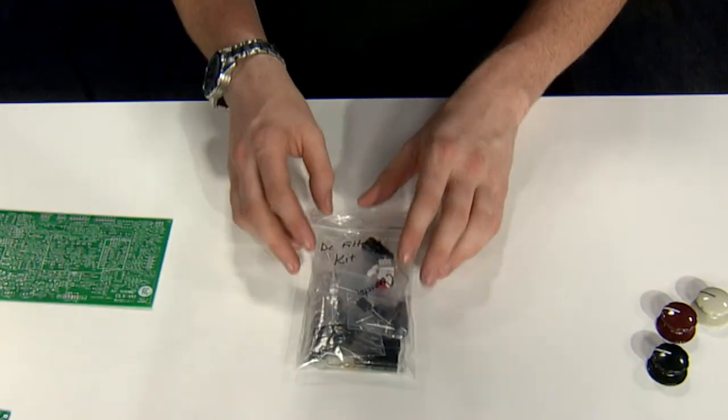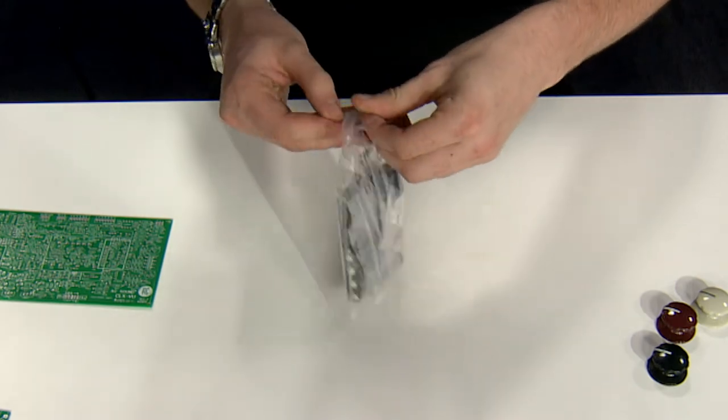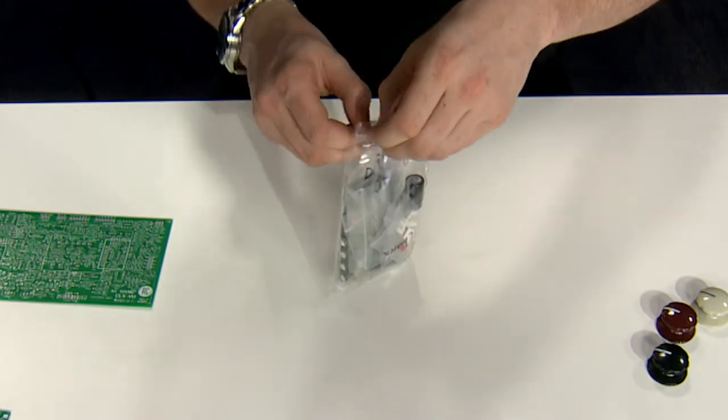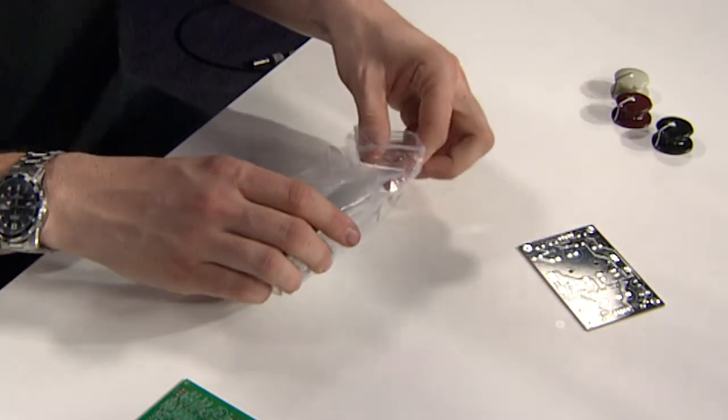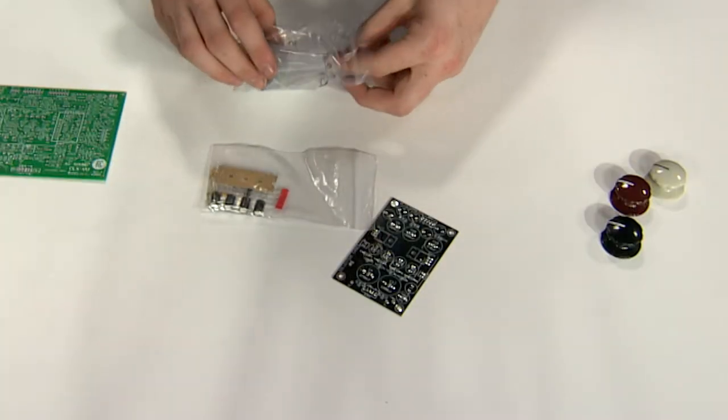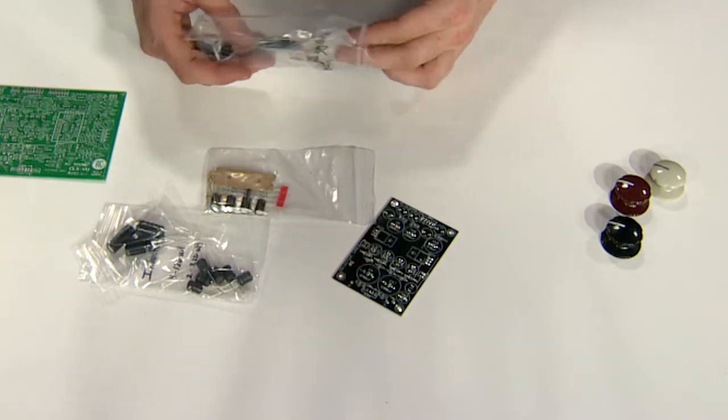Some of the other things they offer are things like this DC filtering kit. This is designed to be incorporated with a lower-end power supply to clean it up to give you a much better noise floor and filter out some of the high-end noise and low-end rumble that may be present in your circuit because of that.